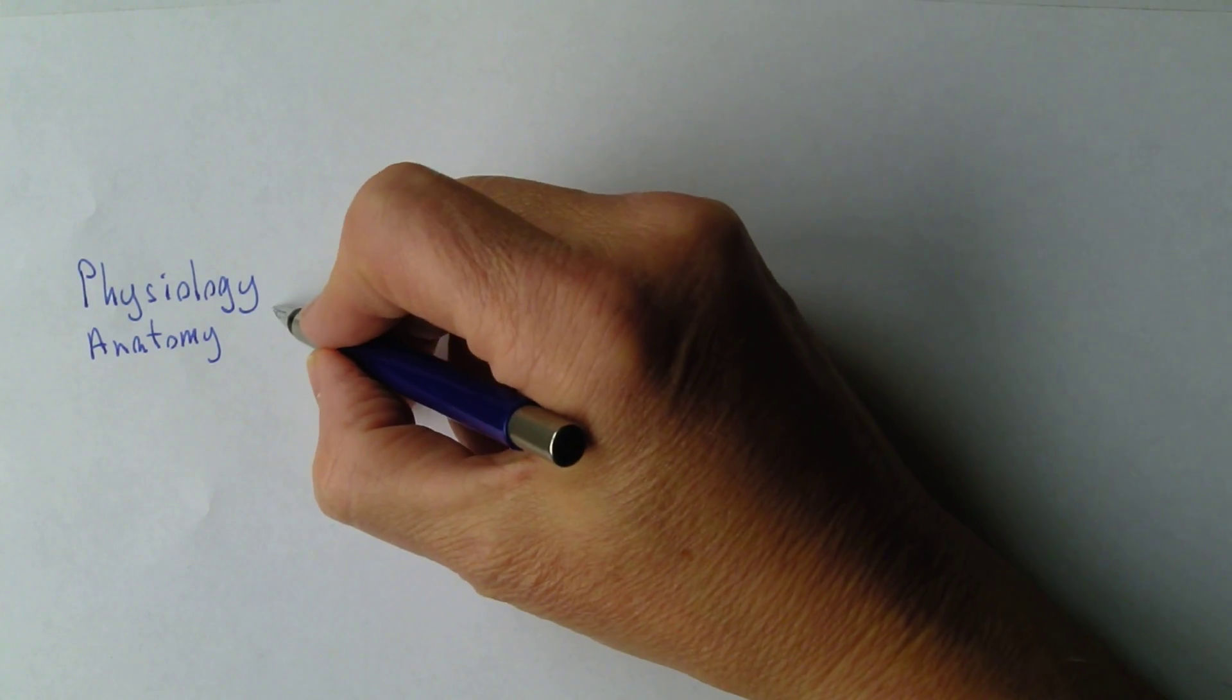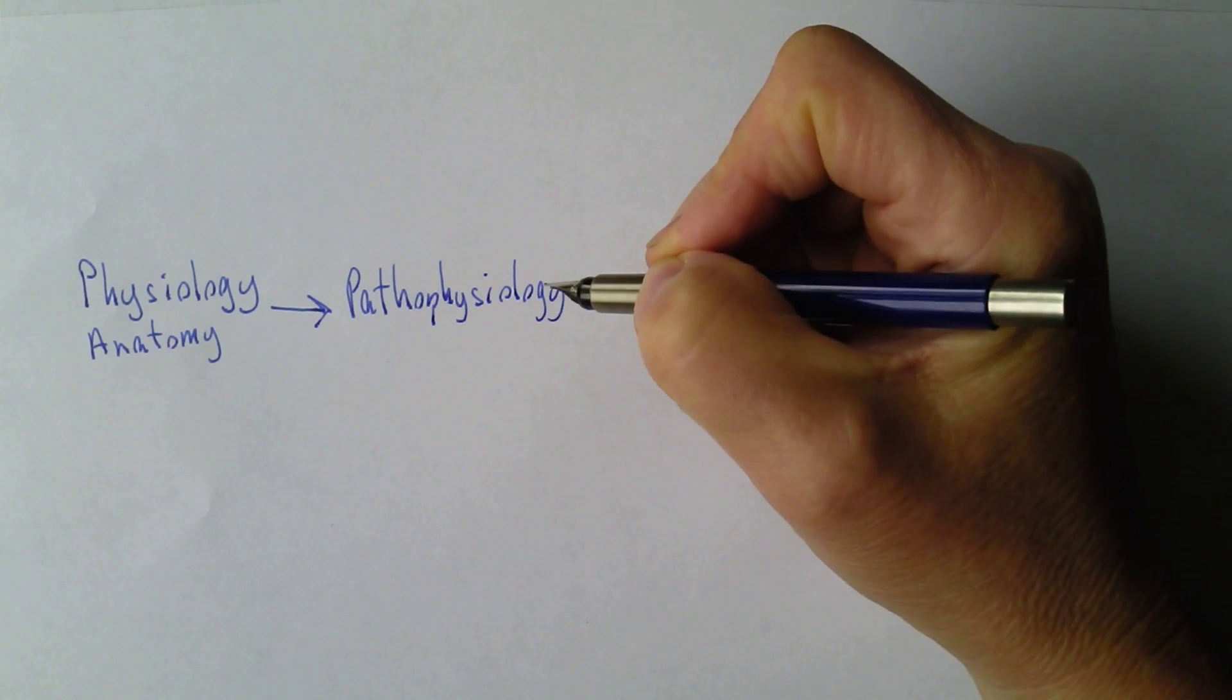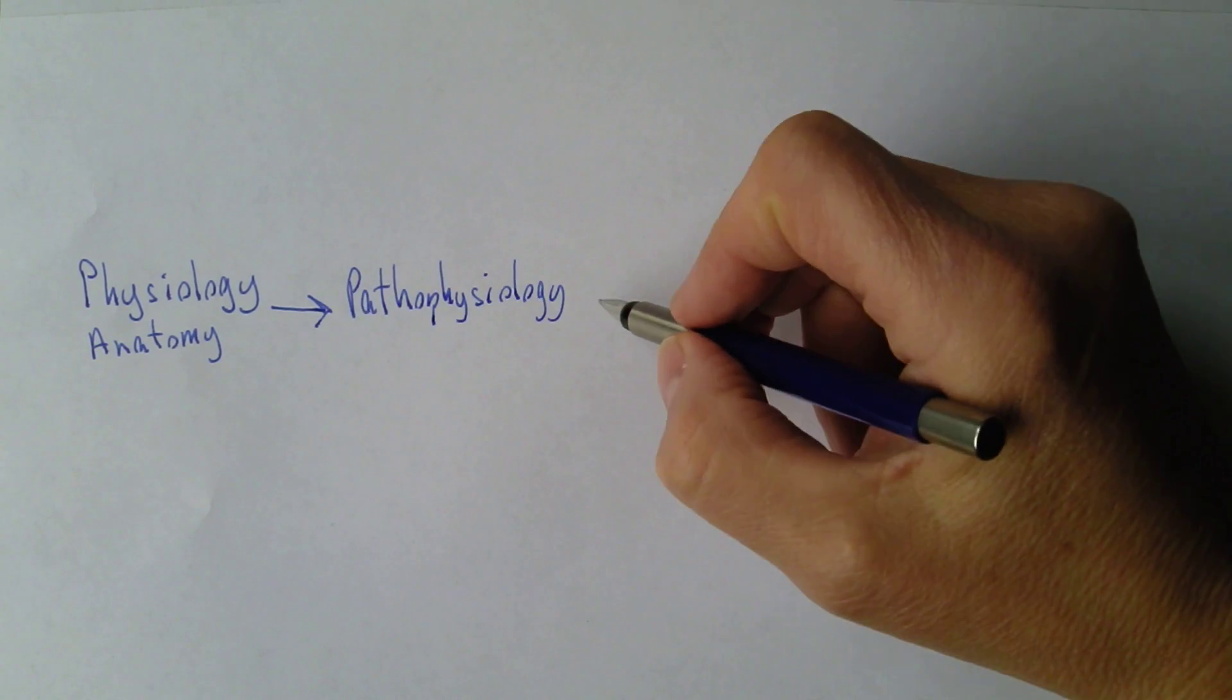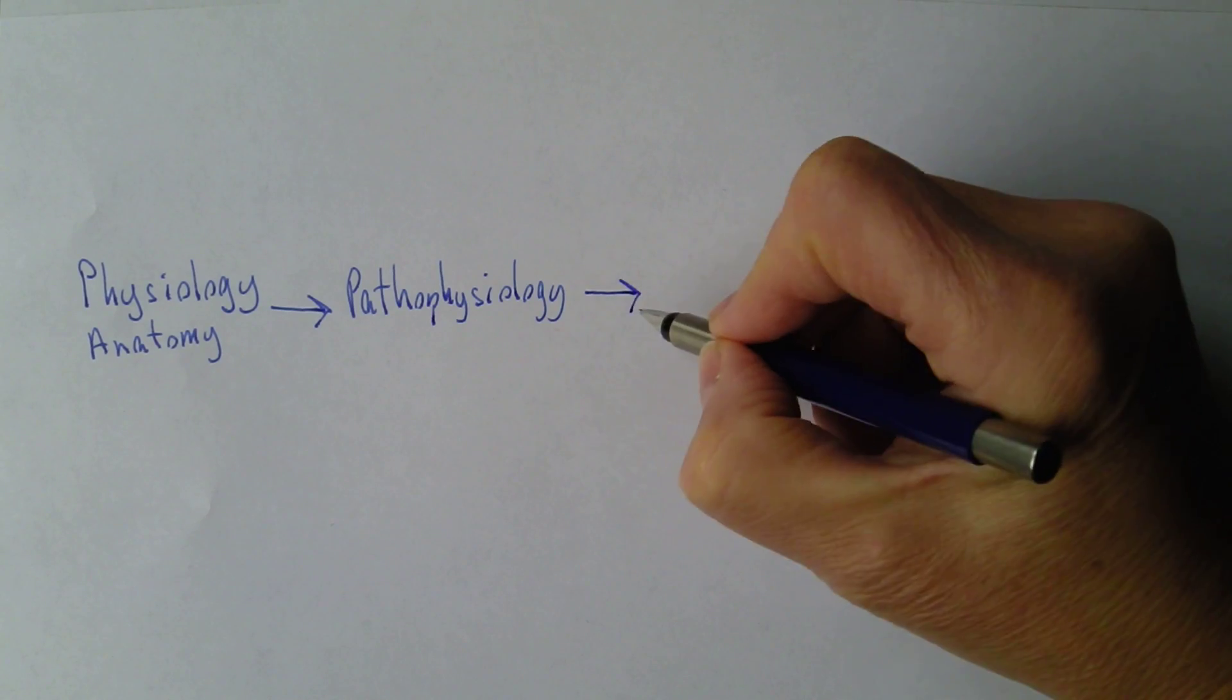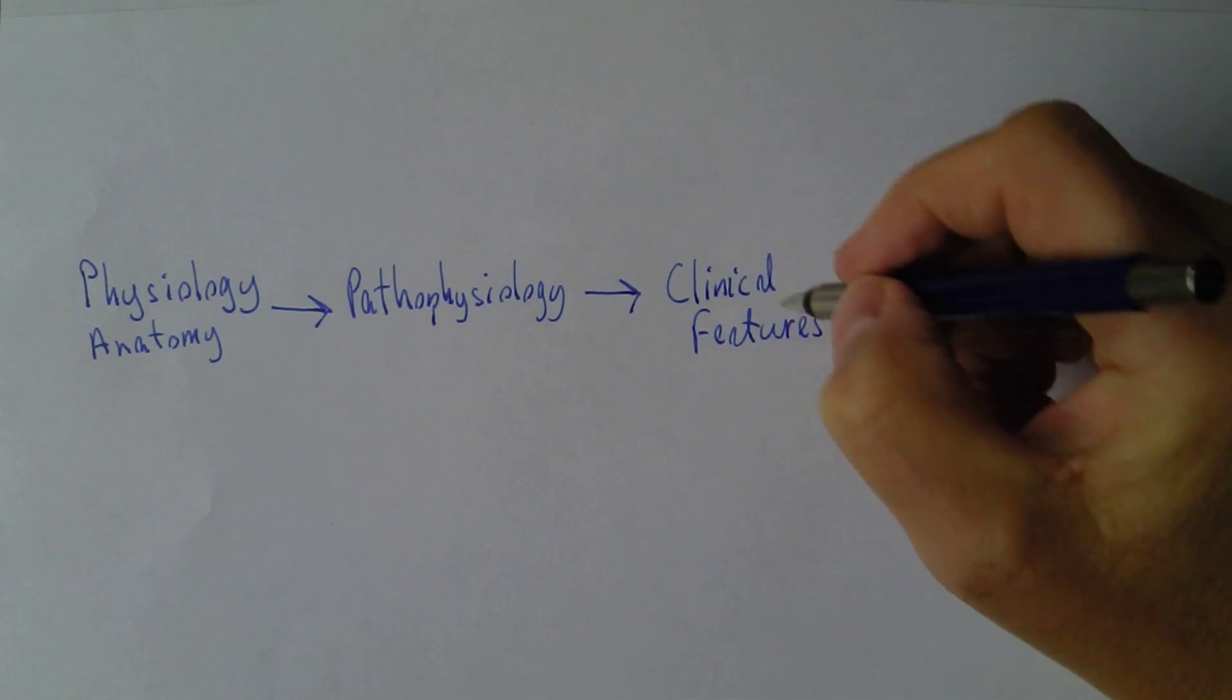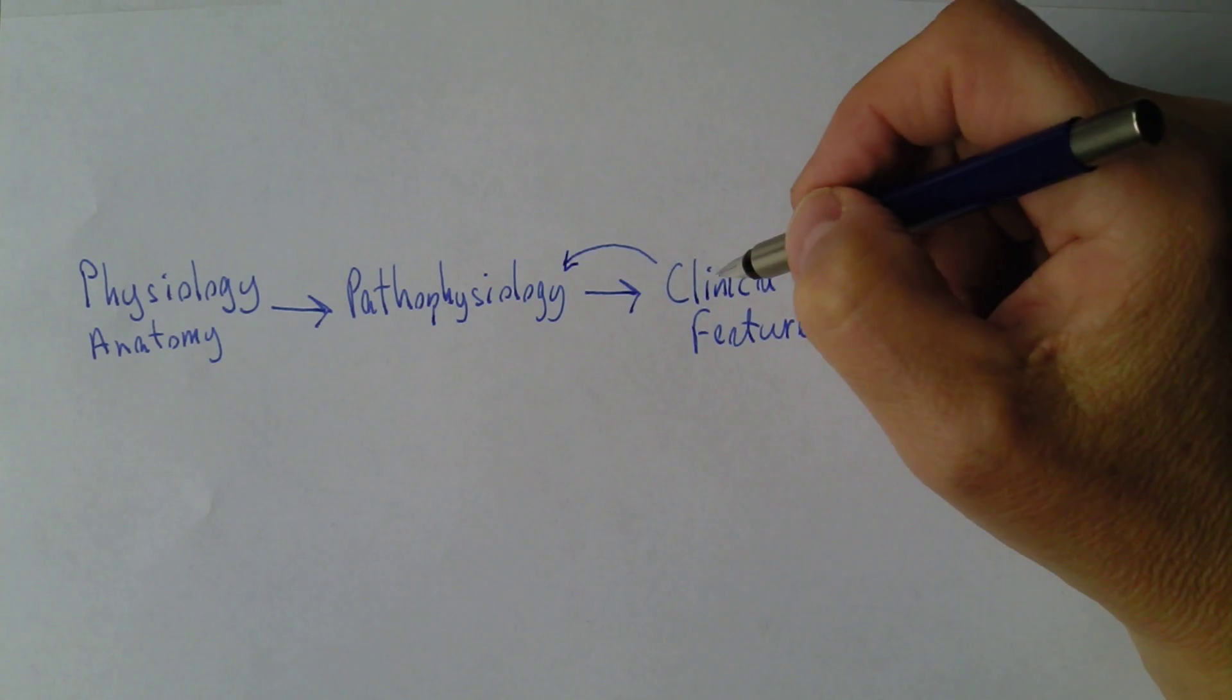But the trouble is sometimes there's changes and these changes can be what we call pathophysiological changes. So physiology can change to pathophysiology and pathophysiology is abnormal function. Now that's bad because we don't want the body to function abnormally. But it's good because it gives us an opportunity to work out what is going on. Because pathophysiology will give rise to clinical features.